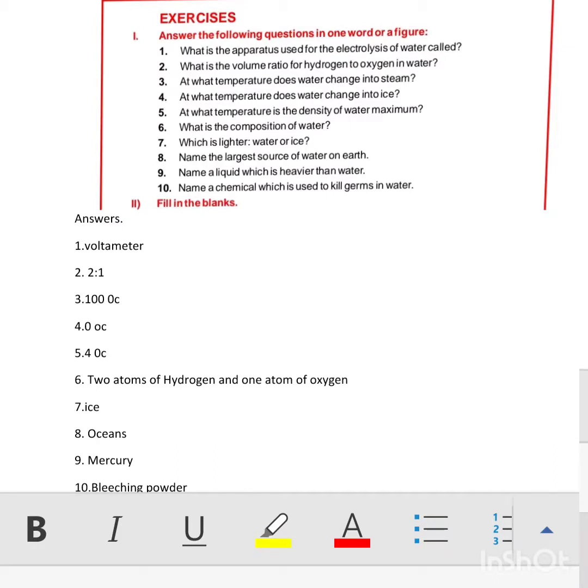Question 9: Name a liquid which is heavier than water. The answer is mercury. Mercury is actually a metal but it is in liquid state.